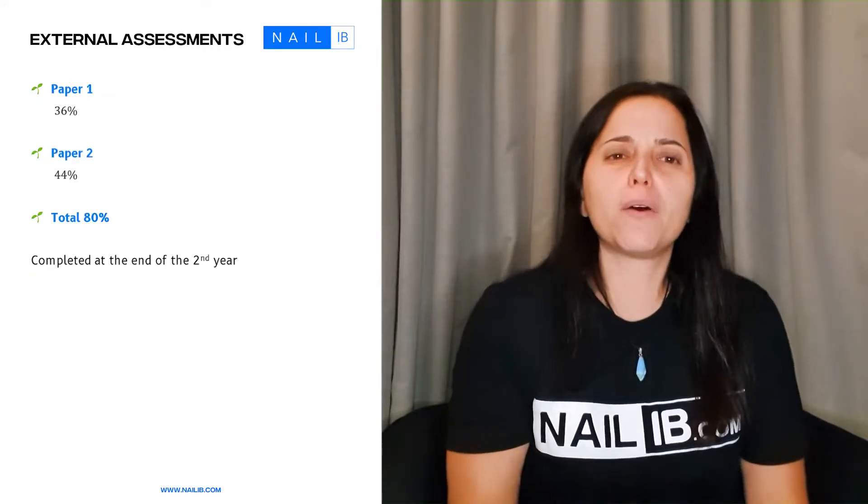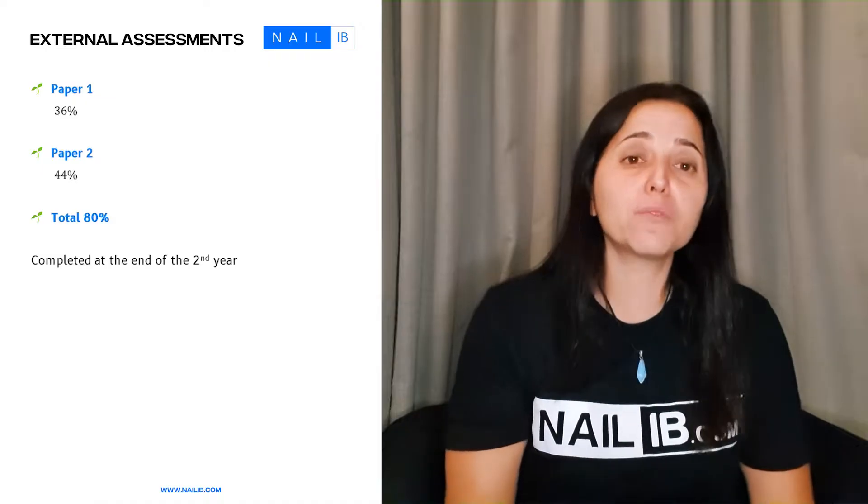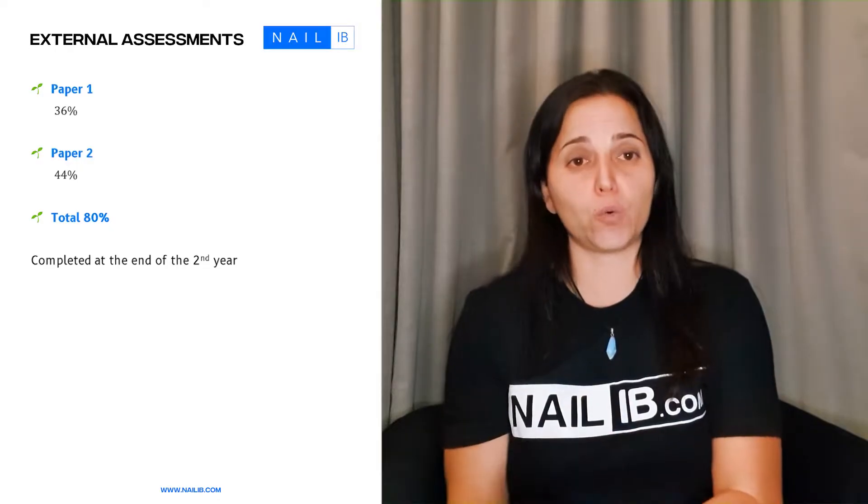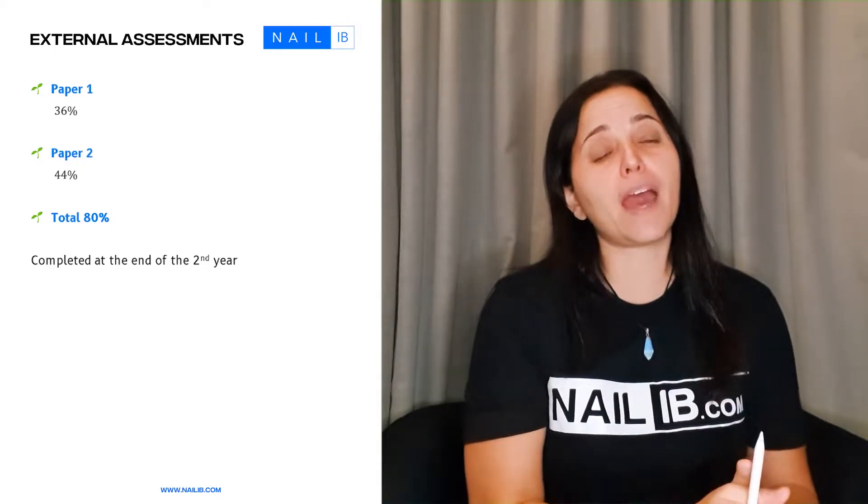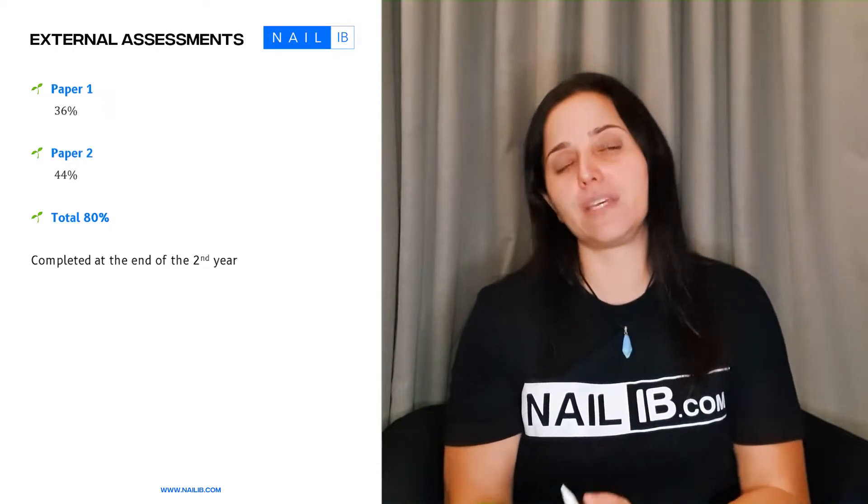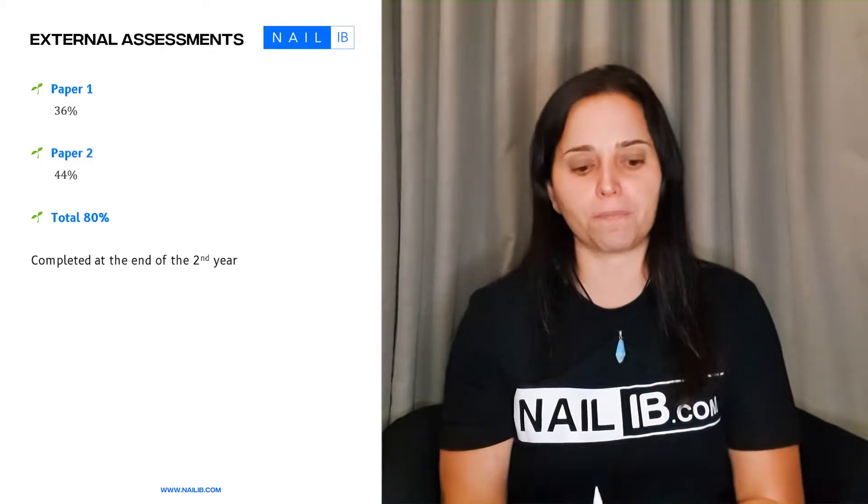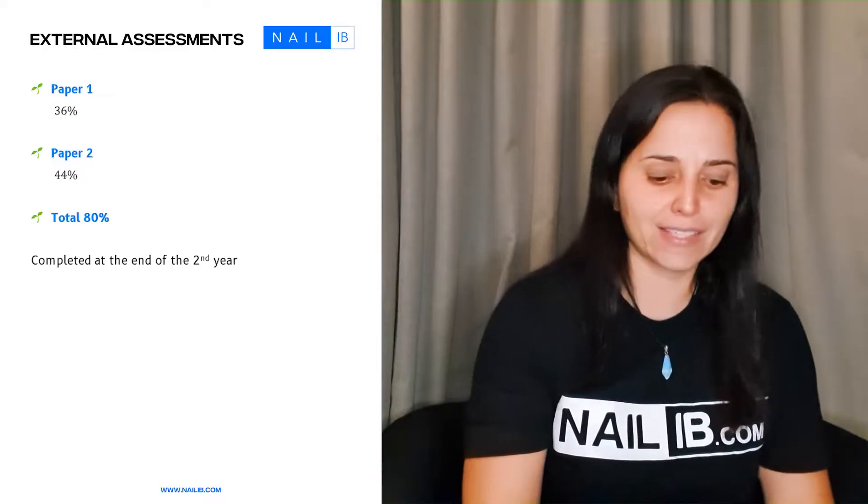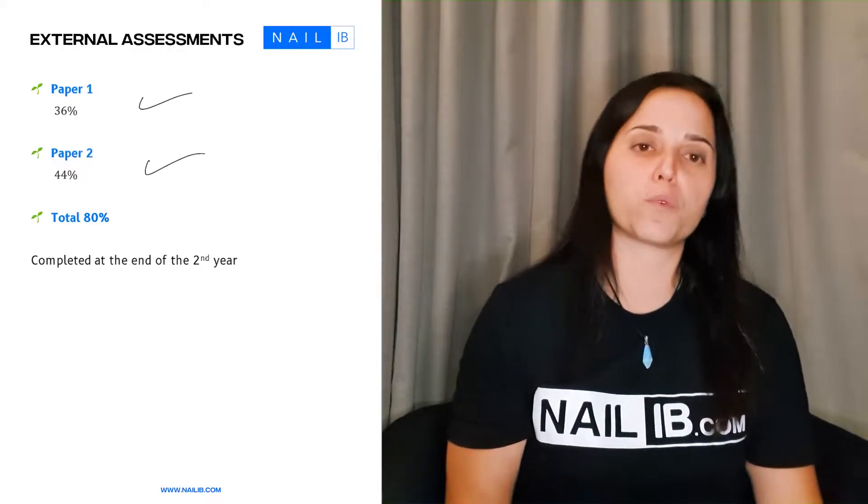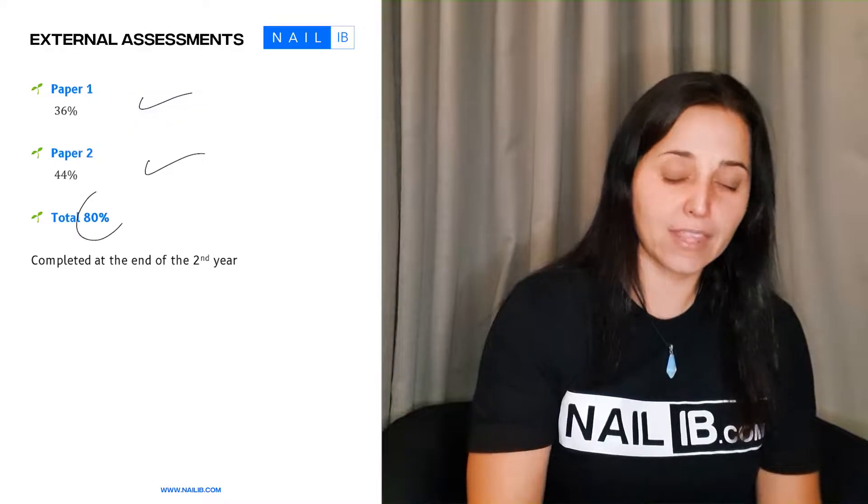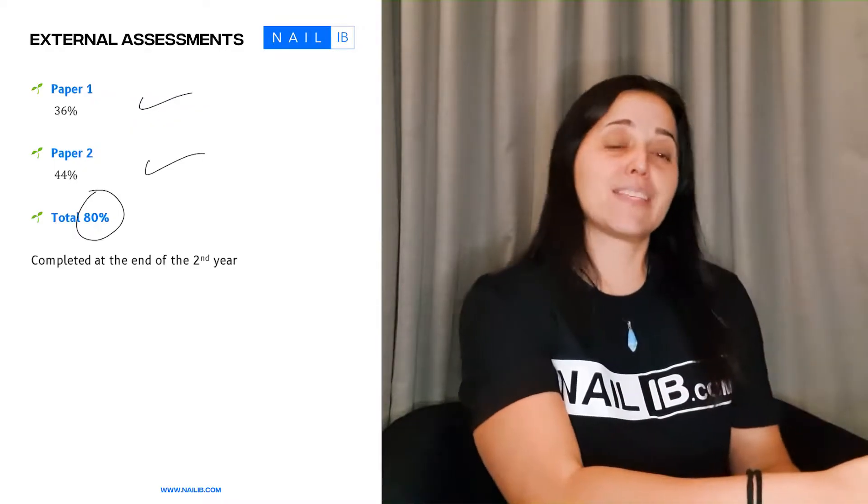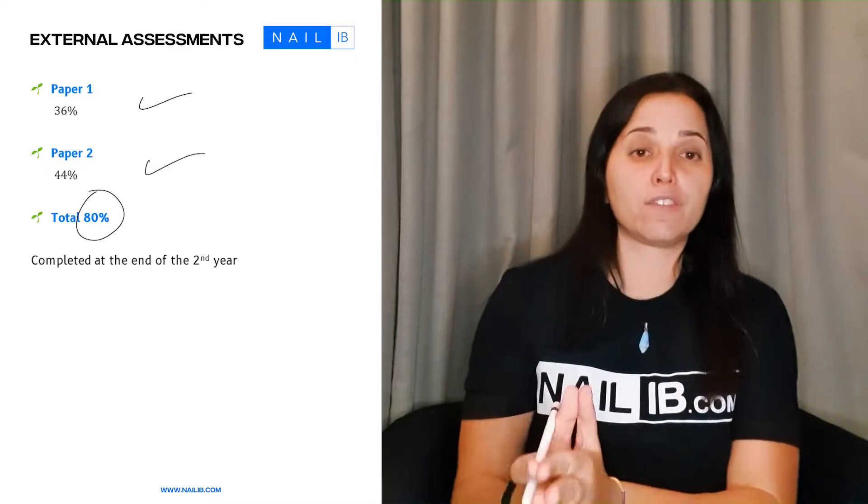Now let's talk about external assessments. When it comes to external assessments, there are two: paper one and paper two. Those are two tests that will be happening at the end of your program, be it in May or in November. Paper one is 36 percent and paper two is 44 percent. If you notice, this makes 80 percent of your grade, which is only going to be graded at the end of the program.